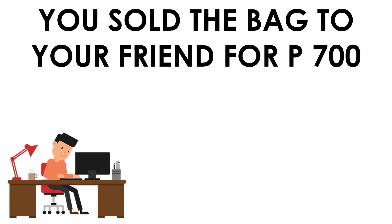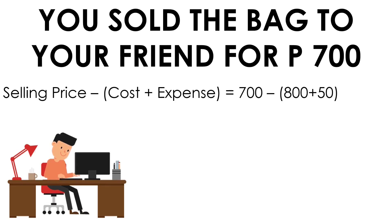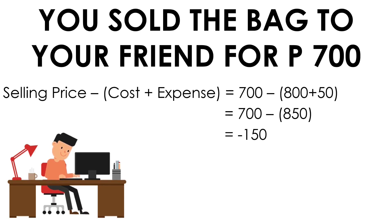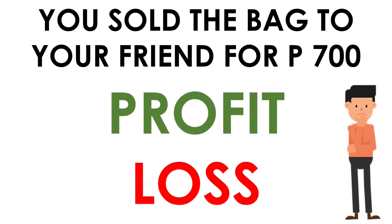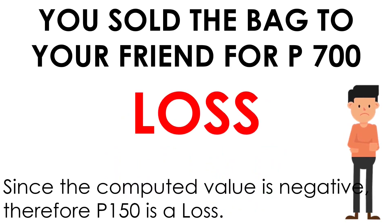For the second situation, the selling price is 700 pesos. The equation will be 700 minus the quantity of (800 plus 50). The cost and expense is equal to 850. Subtracting it from 700 gives a result of negative 150. Is it a profit or a loss? Correct — it is a loss. Since the computed value is negative, therefore 150 is a loss.